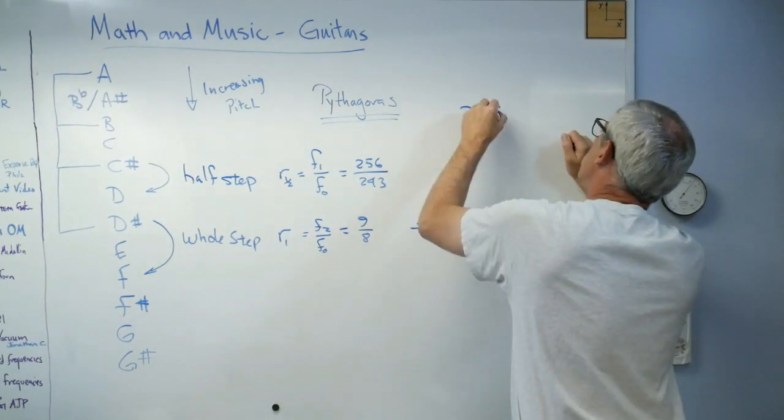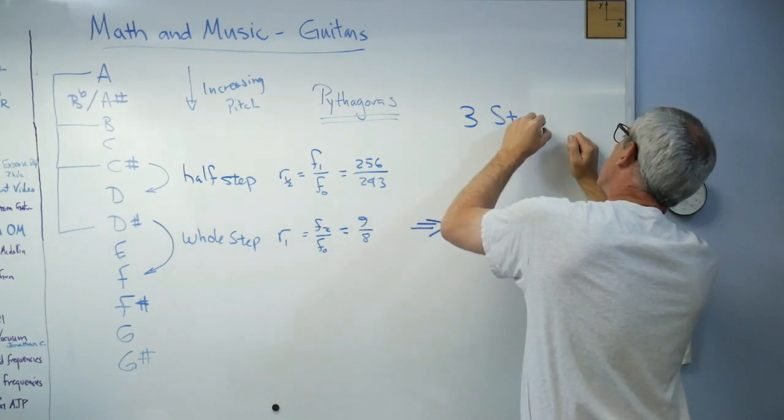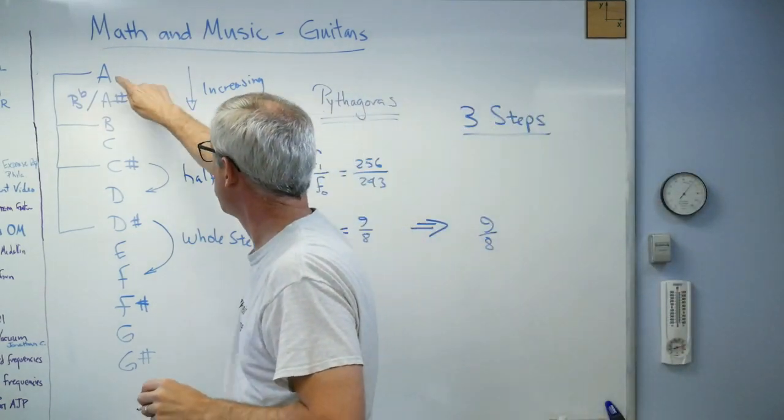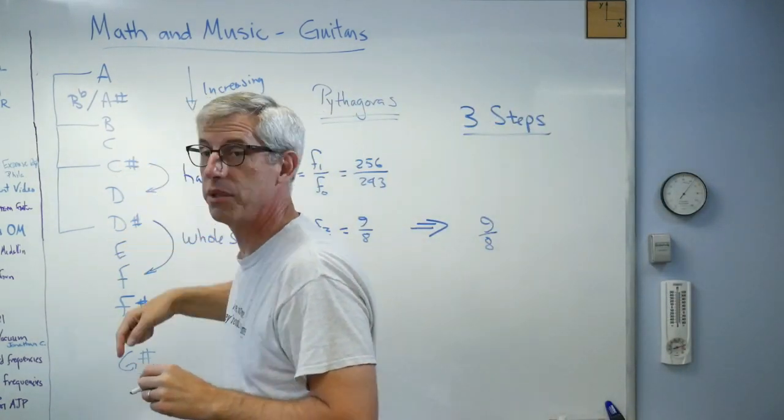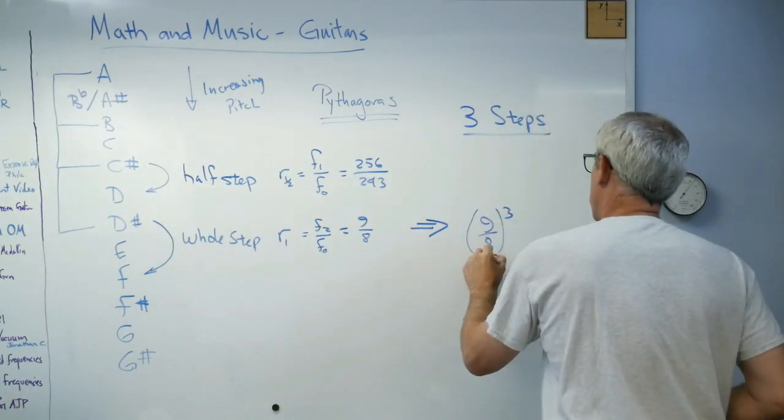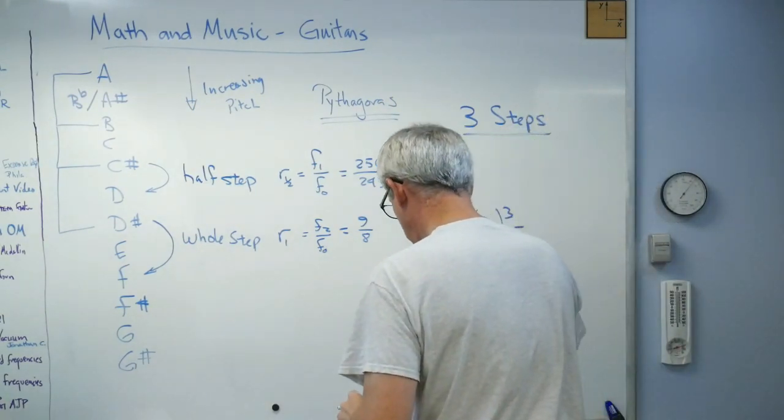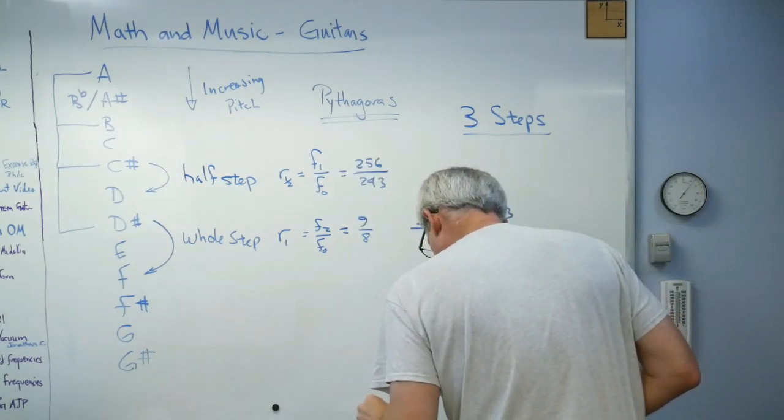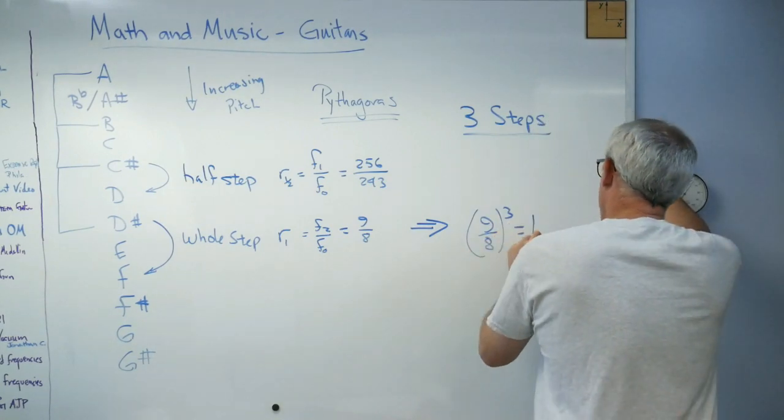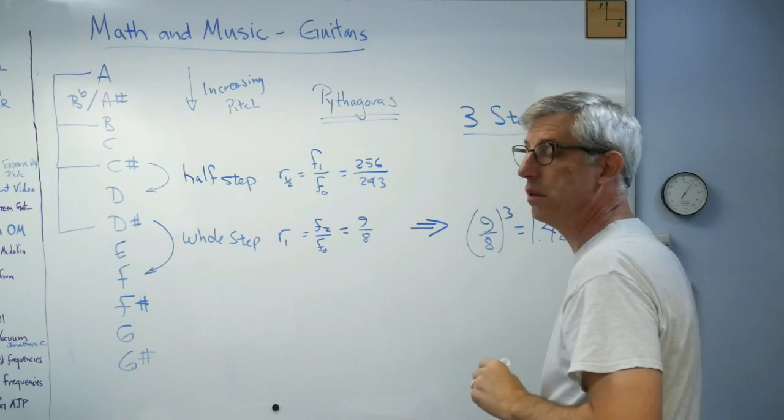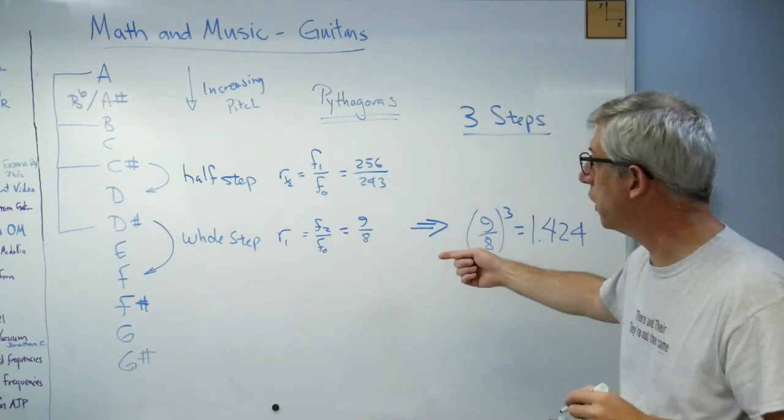So I'll go three steps. Well that should be 9 over 8 to get me from there to there times 9 over 8 times 9 over 8. So it's 9 over 8 cubed. And that comes out to be, let's see, do I have it? Boy, I better have it here. There it is. 1.424. That's the frequency ratio if you do three whole steps.